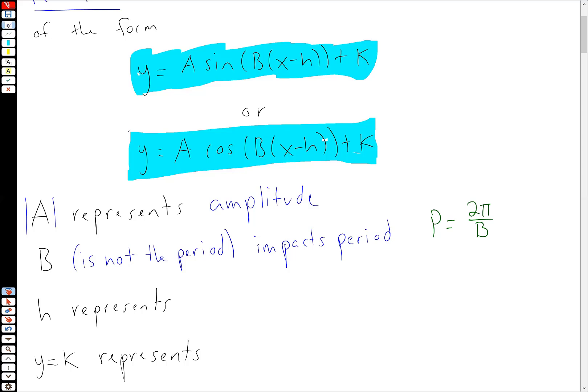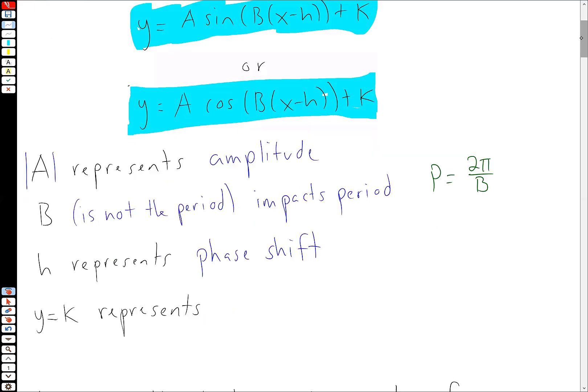H represents the phase shift, or you can think of this as a horizontal transformation, same thing. And then Y equals K, so that number on the outside here represents the midline. So the line that cuts your trig function in half.